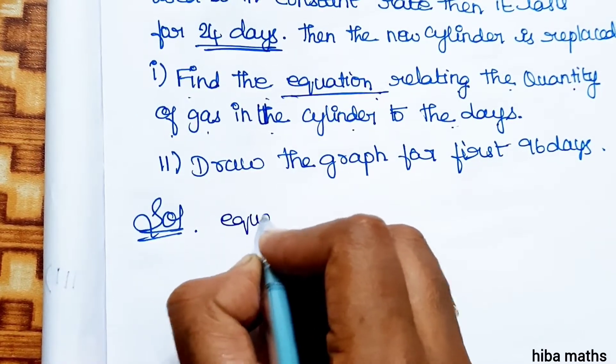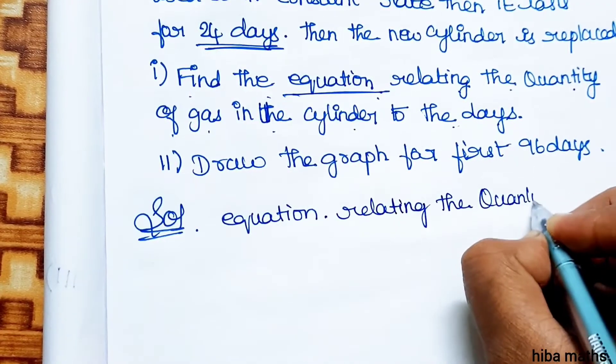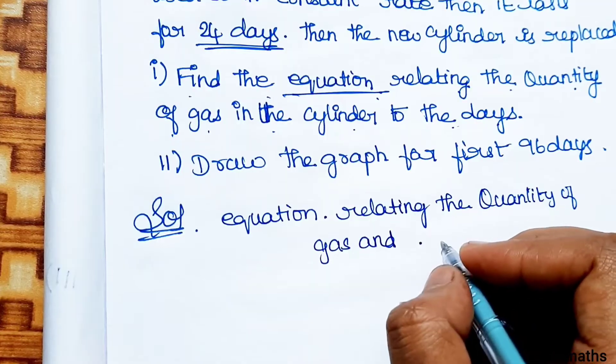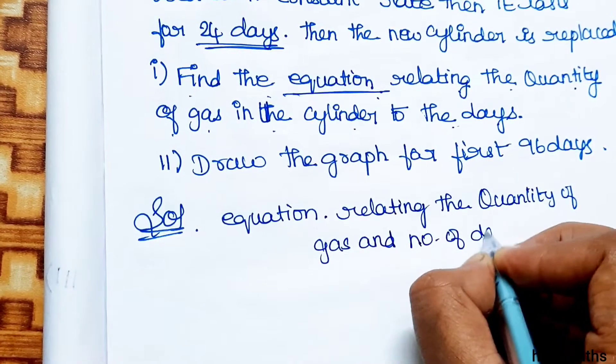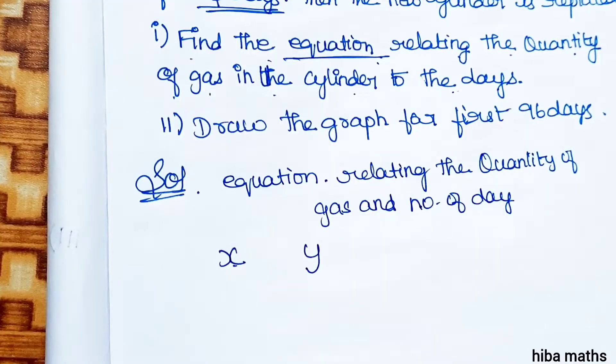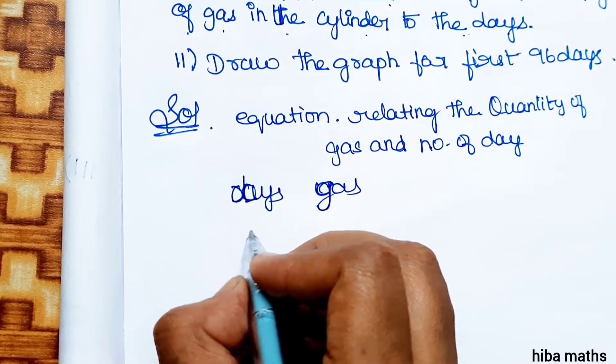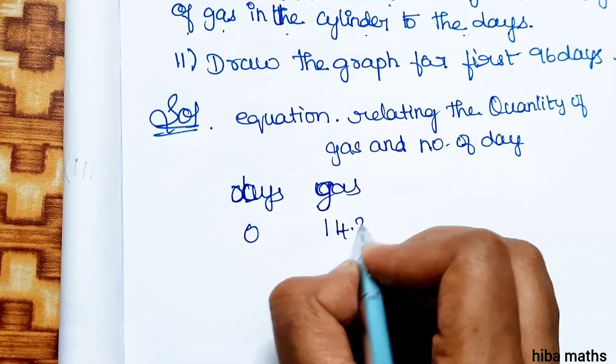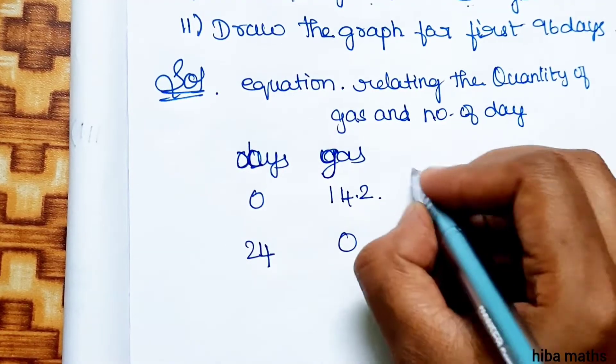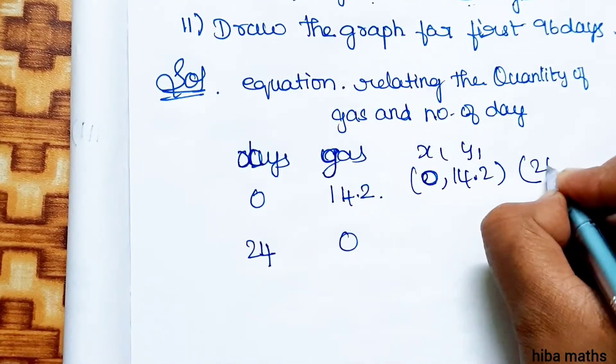First, we'll set up the equation with days and gas. On day 0, the gas is 14.2. This is the first point: (0, 14.2). On the 24th day, gas is zero. So this will be the same point: (0, 14.2) is x1, y1, and (24, 0) is x2, y2.